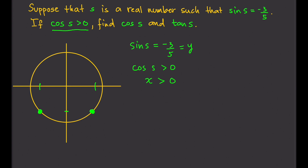We select this point, because the other one has a negative x-coordinate. Using the condition that cosine s is greater than zero — x is greater than zero — we choose that point. We can then draw a right triangle from it. The hypotenuse r equals one, and y equals negative three-fifths.